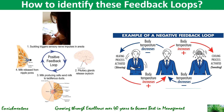Identifying feedback loops in a system involves recognizing what are called recurring patterns of interactions — where the output of a process influences its own behavior or the behavior of related processes. How can you identify such feedback loops? Let's take a look at that.